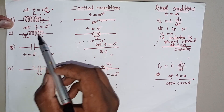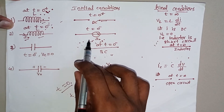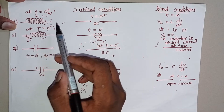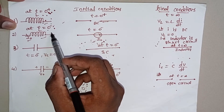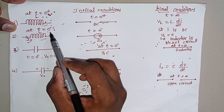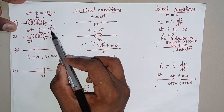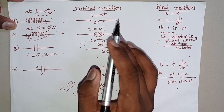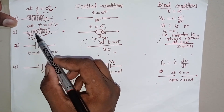Consider an inductor with current I₀ flowing through it. At T = 0−, just before switching off, the current is flowing through the inductor. The inductor stores some energy, and that energy does not decrease rapidly — it decreases gradually. So at T = 0−, the inductor acts as a current source, with the current source value I₀ equal to the current previously flowing through the inductor.